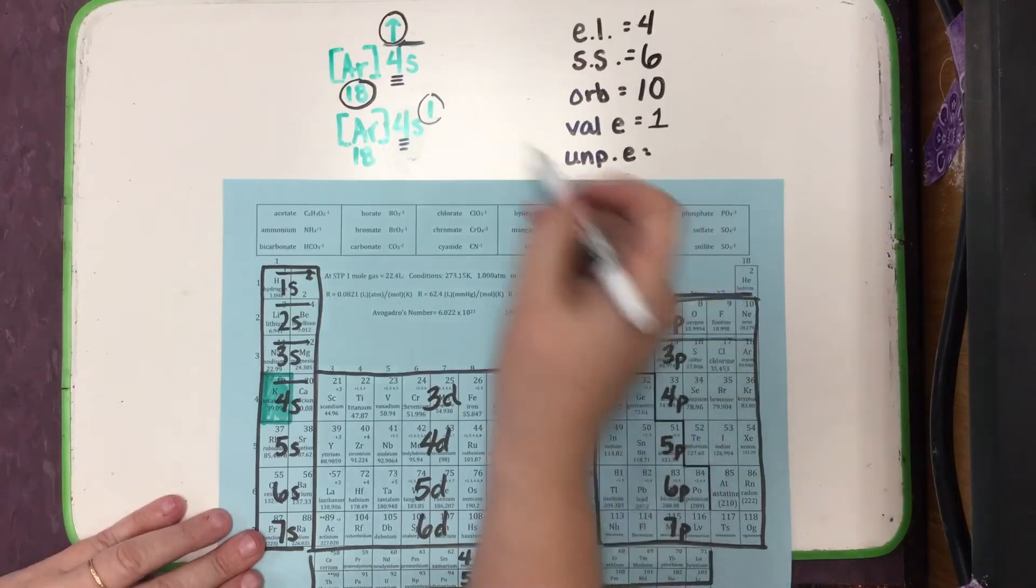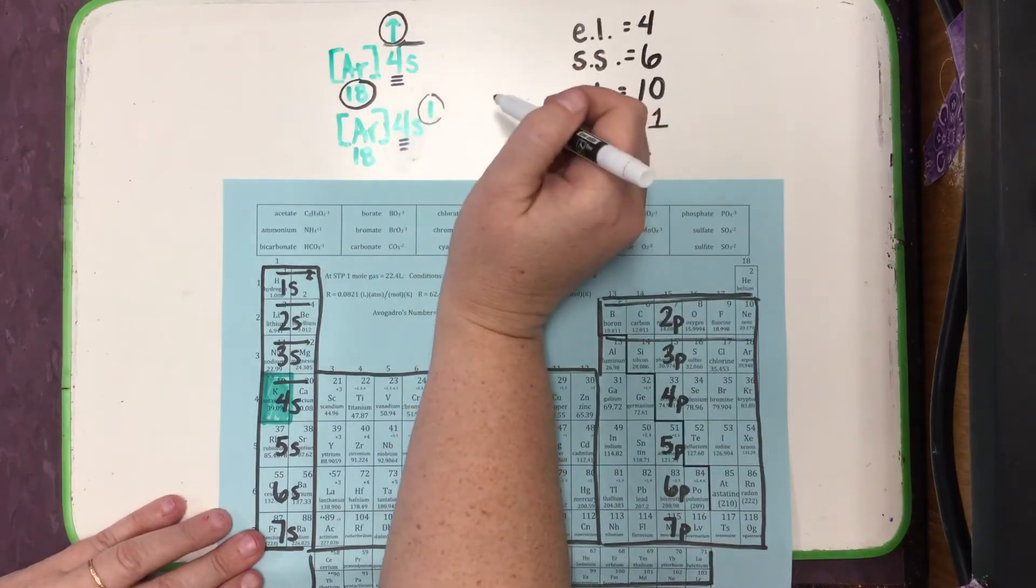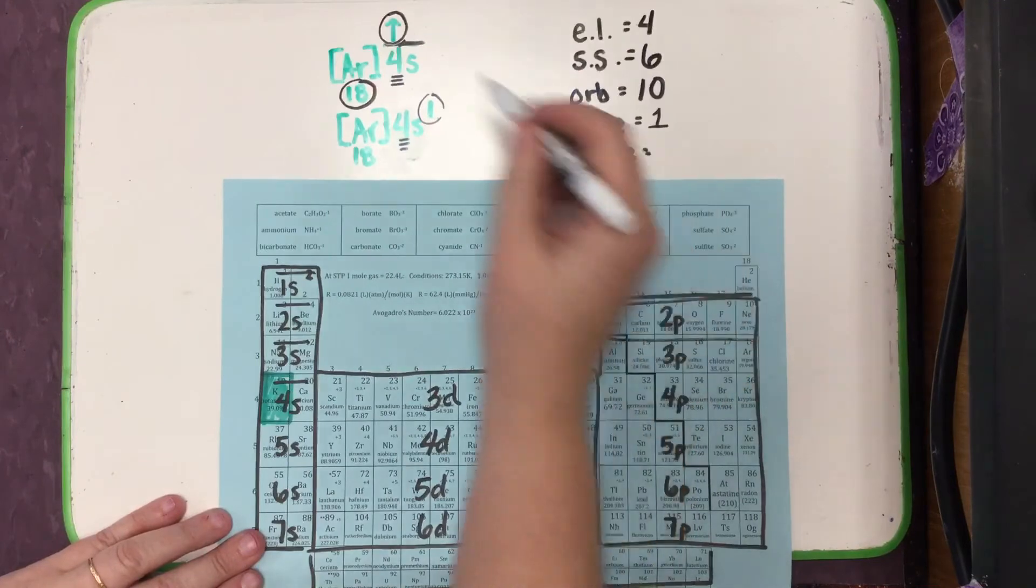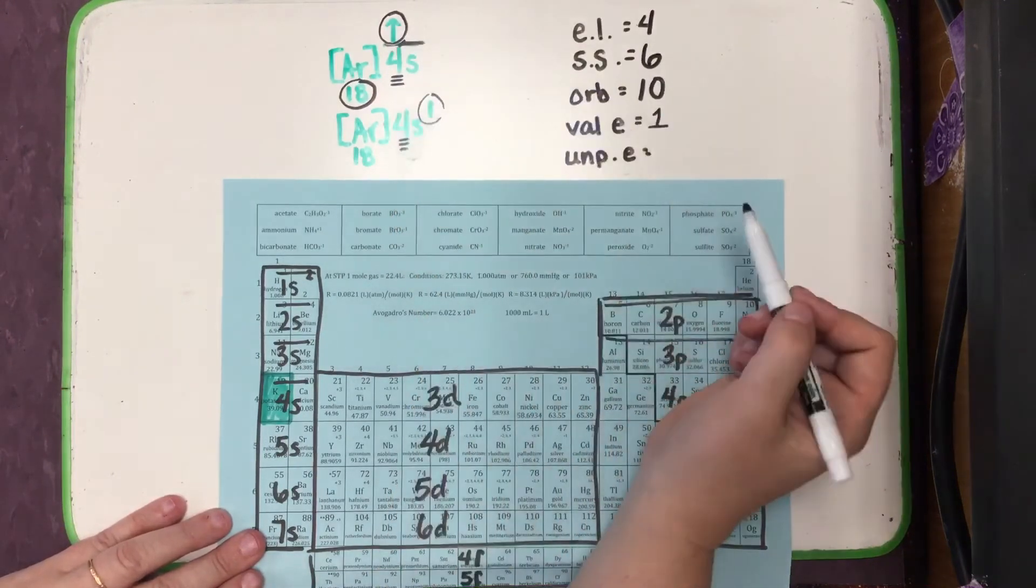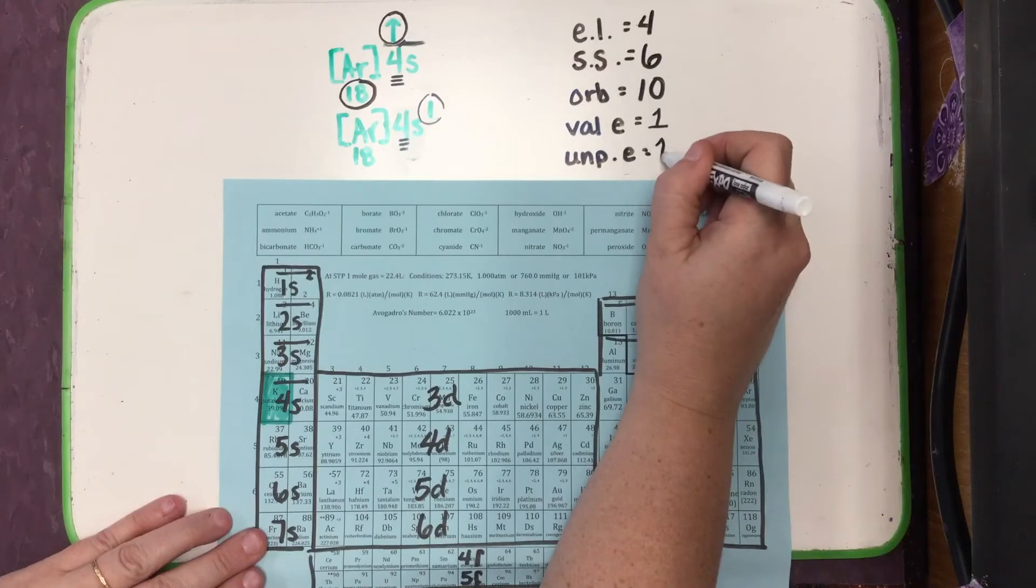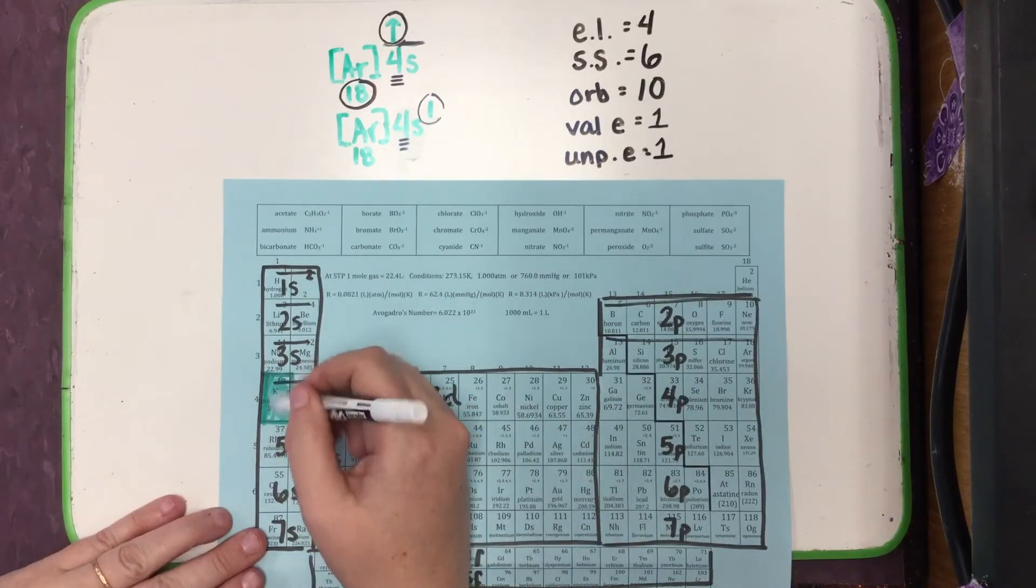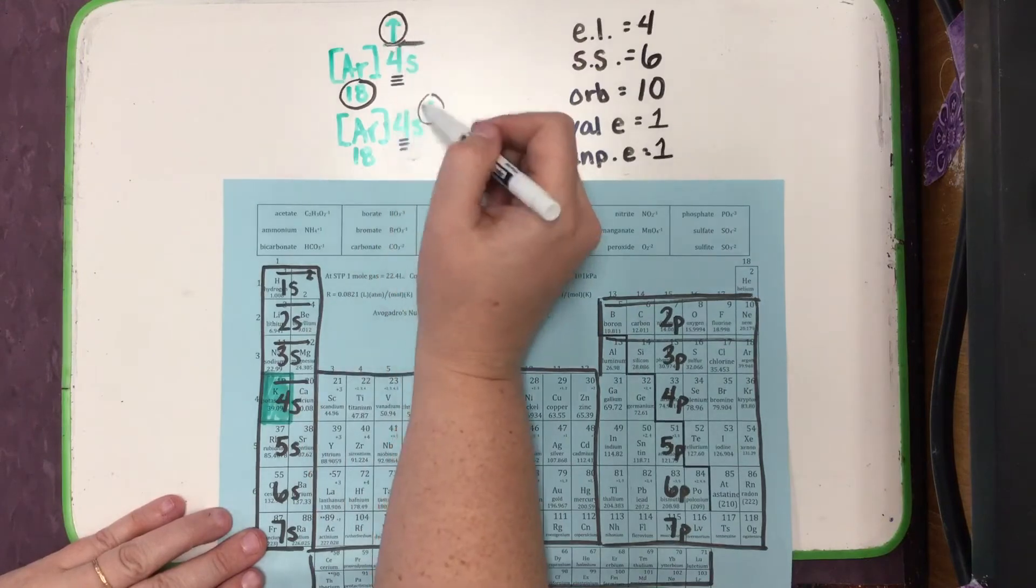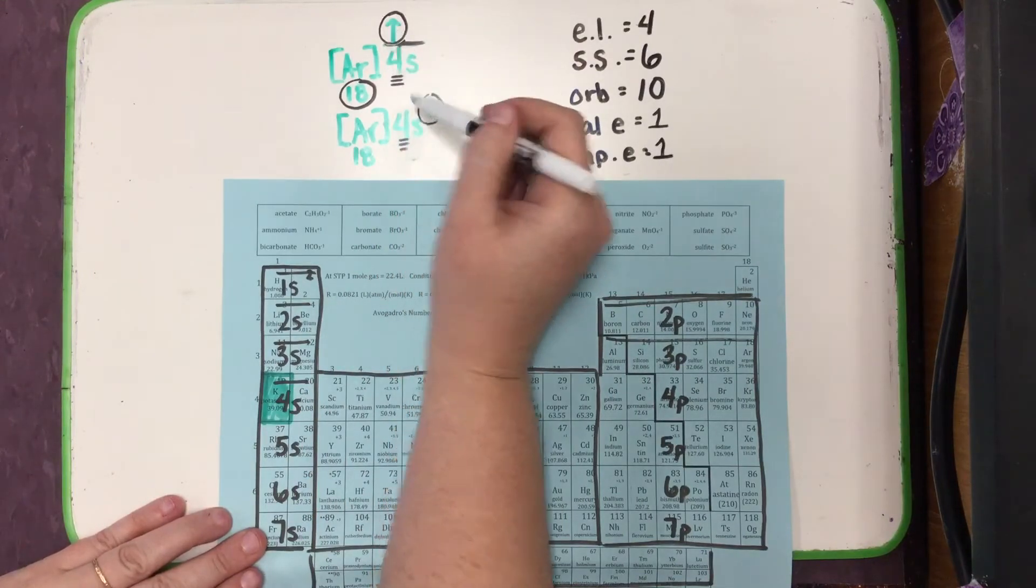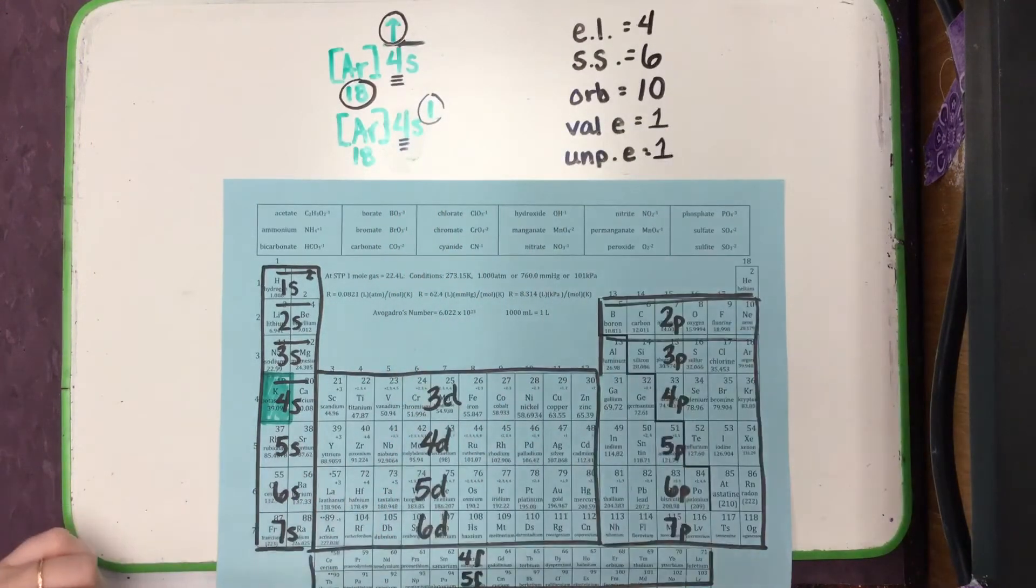For the unpaired electrons, we really should be looking at the orbital notation. An unpaired electron is any place we have an up that does not have a down beside it. So we also have one unpaired electron. So potassium, which is in group 1 here, has one valence electron and it's also unpaired.